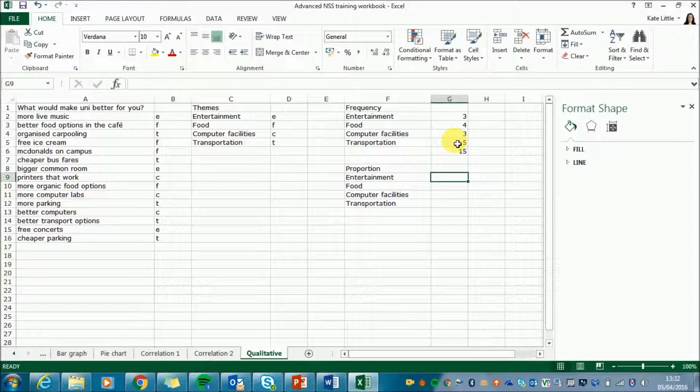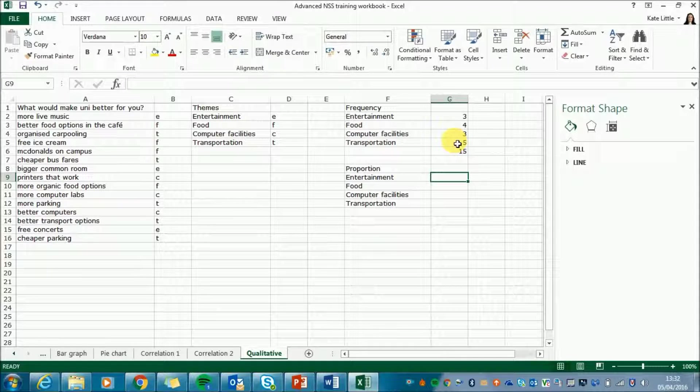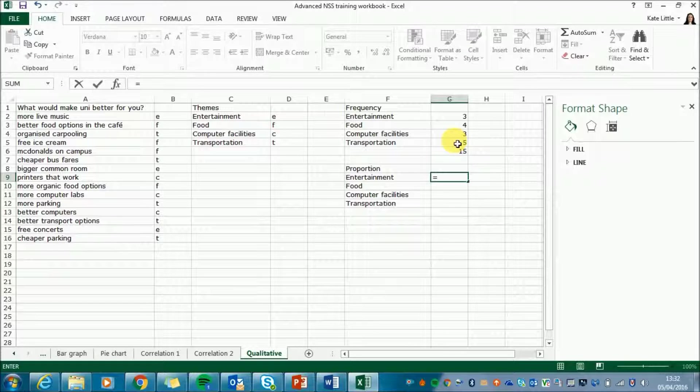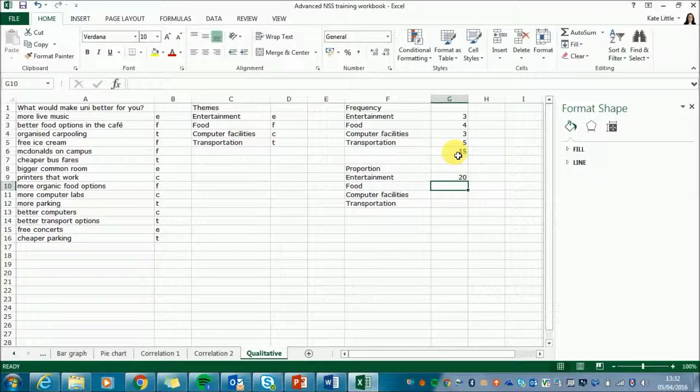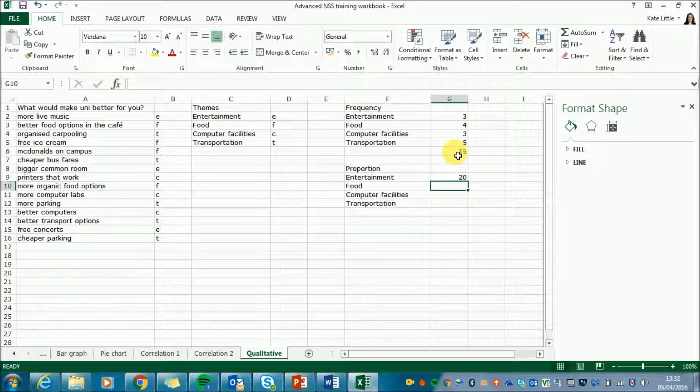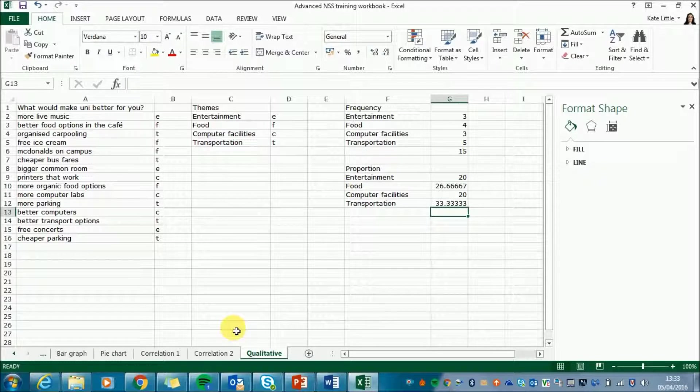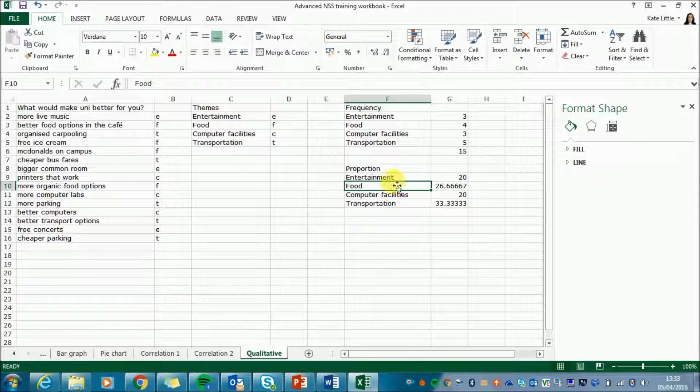The next thing I'm going to do is change these numbers into a percentage so that we've got a proportion chart rather than a number of actual comments. So to do that I'm going to again start with equals and for entertainment go the entertainment score divided by the sum and put the percentage sign. So that's twenty percent. I'll then repeat that for all the other categories.